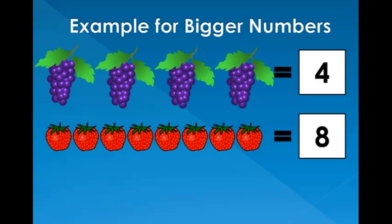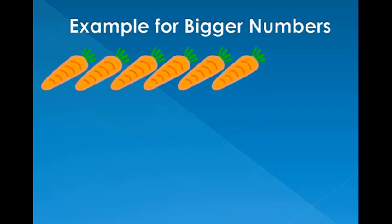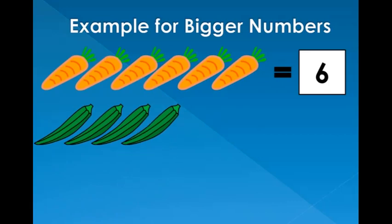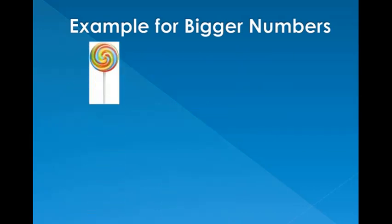1, 2, 3, 4, 5, 6. There are six carrots. 1, 2, 3, 4, 5, 6, 7. There are seven lady fingers. Which is more in number, carrots or lady fingers? Correct! The lady fingers are more in number, hence the number seven is a bigger number.